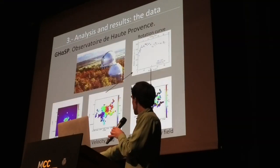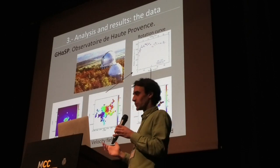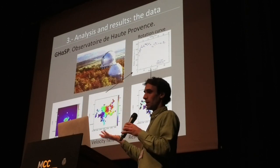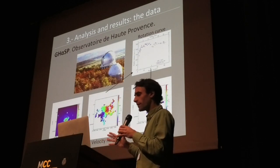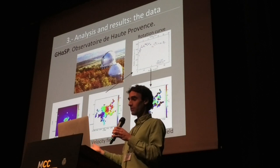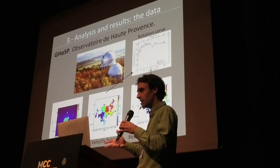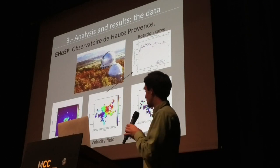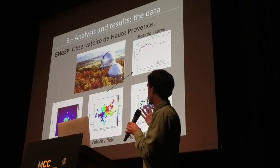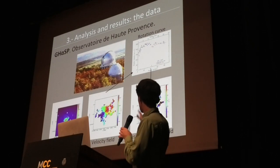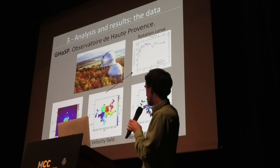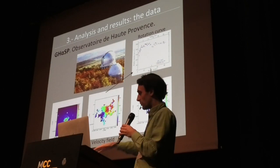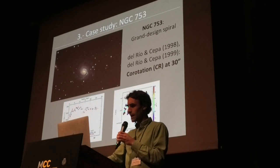What I was assigned to do was to apply this to a significant sample of nearby galaxies. At that point the method had only been presented in a paper applying it to a few galaxies as a sort of proof of concept. I had the exciting task of applying it to many dozens of galaxies and testing it statistically. We used data from the GHASP survey, a Fabry-Perot instrument based at the Observatoire de Haute-Provence. These are the velocity field, the residual velocity after subtracting the rotation model, and the rotation curve for a specific galaxy.